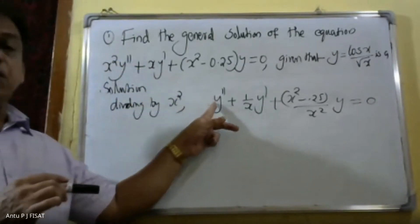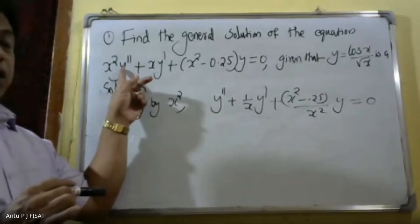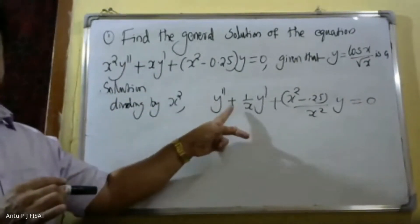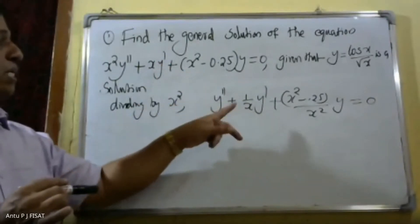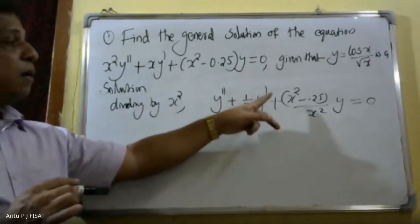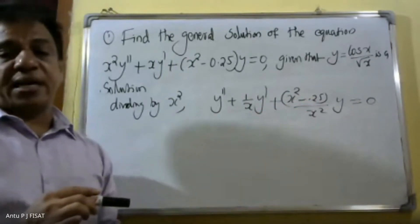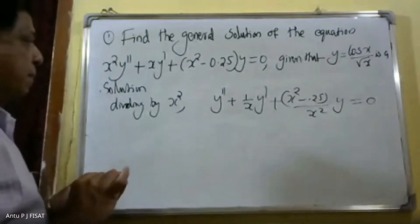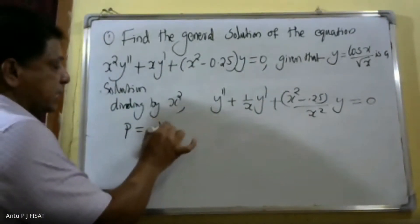Dividing the equation by x², we get y'' + (x/x²)y' + (x² - 0.25)/x² · y = 0. The standard form gives P equal to 1/x.